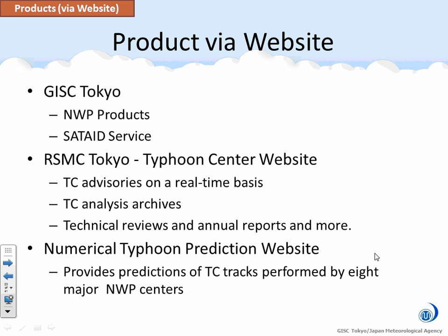This is the product via our website. From DISC Tokyo Portal, the center provides numerical weather prediction products through WIS Discovery Access Retrieval service and SatAid service. From the Typhoon Center website, the center provides tropical cyclone advisories on a real-time basis, as well as a wide variety of products including tropical cyclone analysis archives, technical reviews, and annual reports on activities of the center.